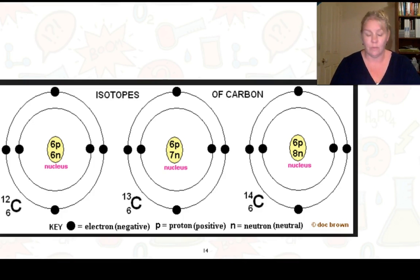Here's those examples I was talking about. So we have carbon 12, carbon 13, and carbon 14. You can see that the number of electrons doesn't change. The number of protons doesn't change, but the number of neutrons do. So we've got 6, 7, and 8 in this case.